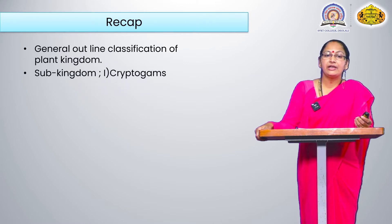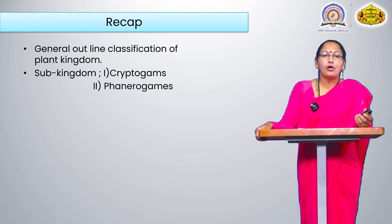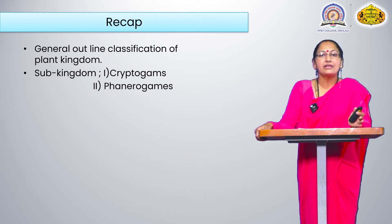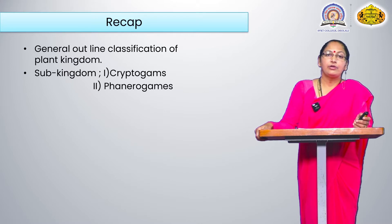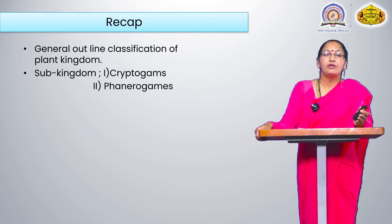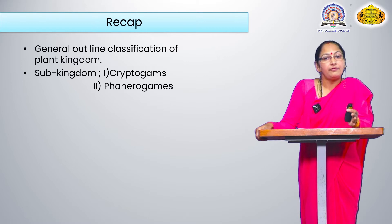The plant kingdom divides into two sub-kingdoms. First is the cryptogames and second is the phanerogames. In cryptogames, all gametes are hidden — crypto means hidden, games means gametes. In phanerogames, all gametes are seen with naked eyes. Phanerogames are flowering plants and cryptogames are the non-flowering plants.